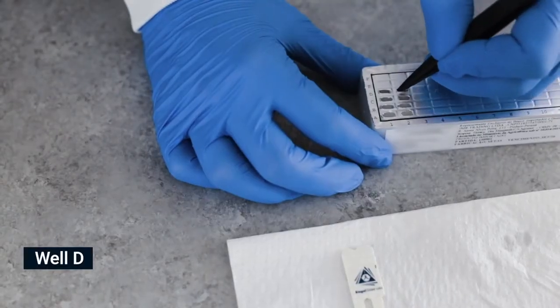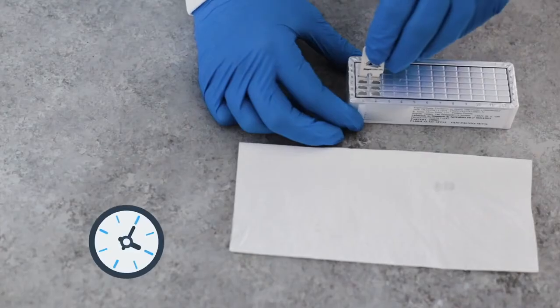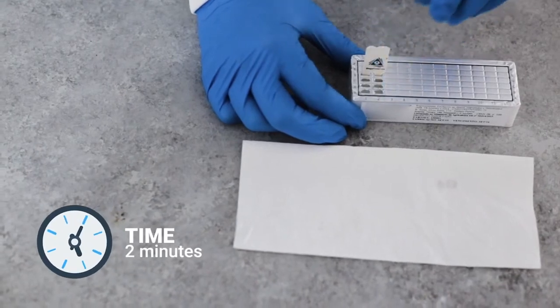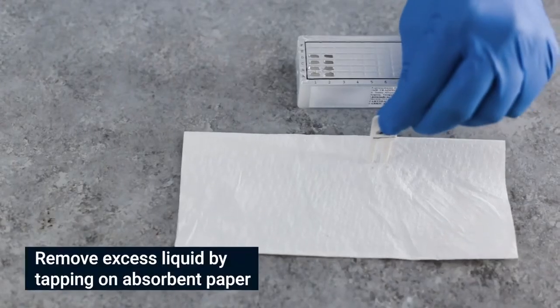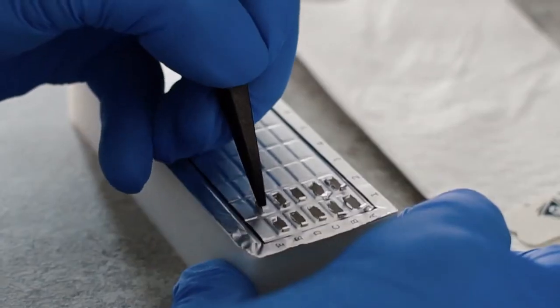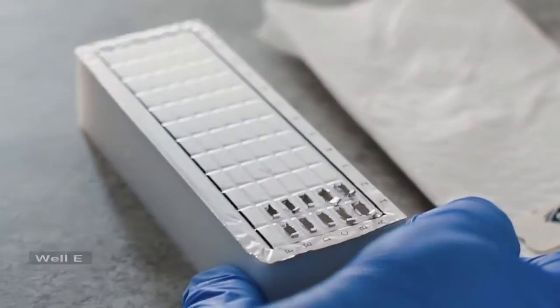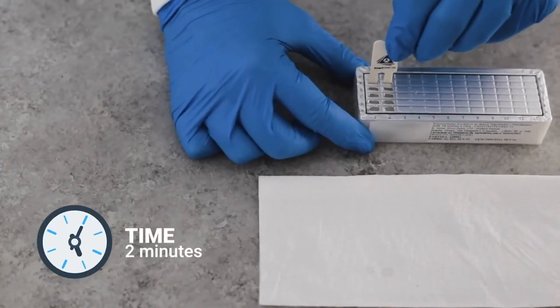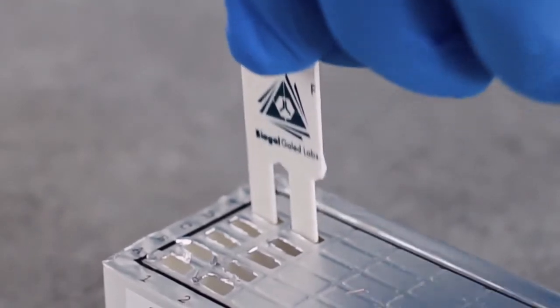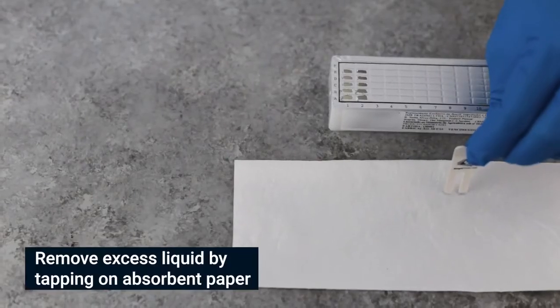Pierce the foil of the next wells in row D. Shake off excess liquid and insert comb for 2 minutes. Move the teeth at least twice during each step. Remove excess liquid. Pierce the foil of the next wells in row E. Shake off excess liquid and insert comb for 2 minutes. Move the teeth at least twice during each step. Remove excess liquid.